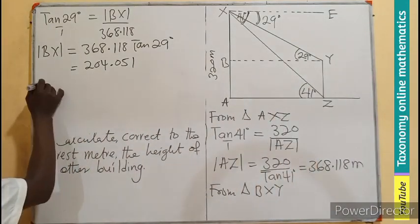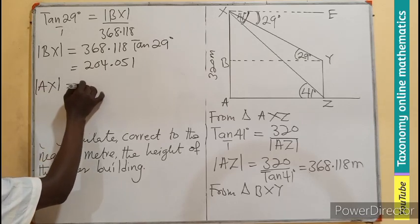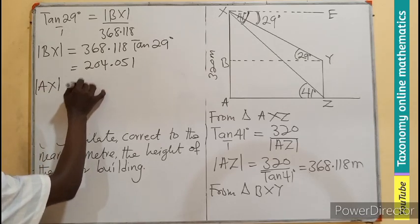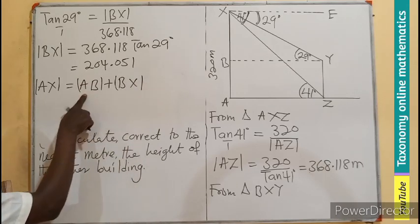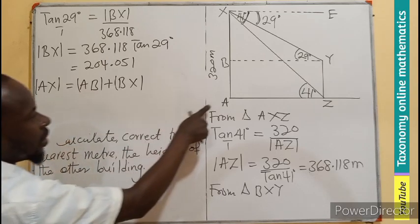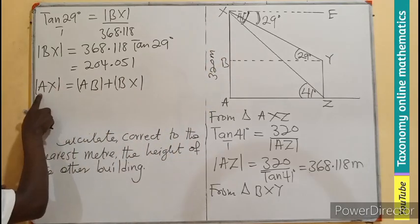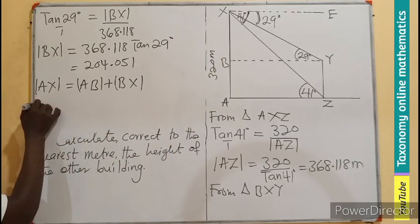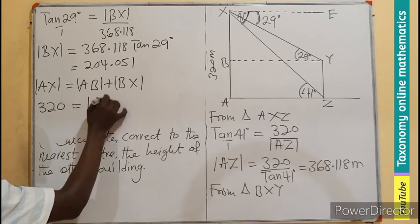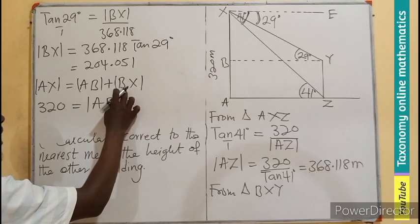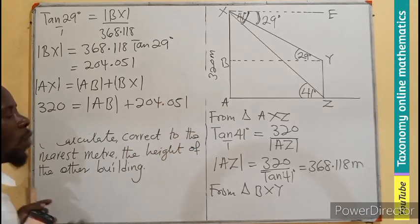The length AX equals AB plus BX. AB is not known, but BX is known and AX is known. So: 320 equals the length AB plus the length BX, which is 204.051.